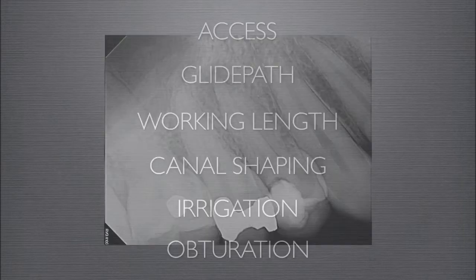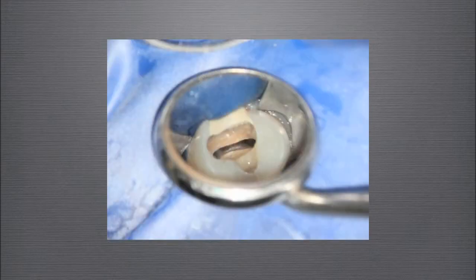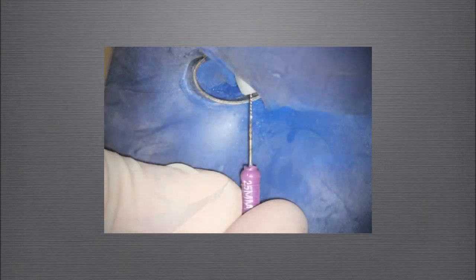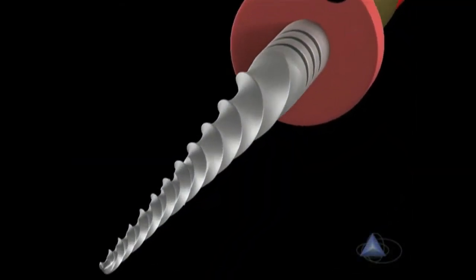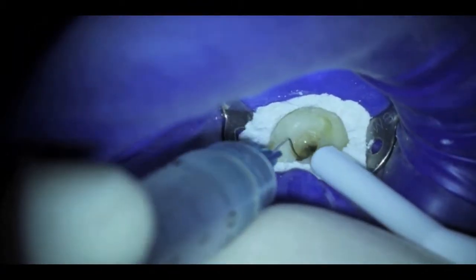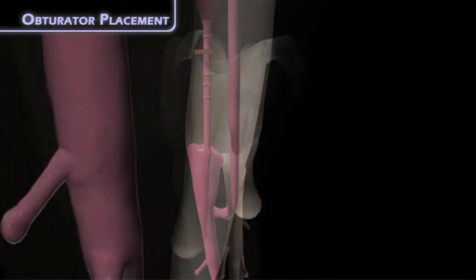Let's walk through a routine case. I treated this necrotic tooth number 5 with symptomatic apical periodontitis. First, I achieved straight-line access and established a glide path with a number 10 file. Canal orifices were shaped with the ProTaper SX file. After reconfirming my working length, a WaveOne primary reciprocating file created the final shape. Using the Tulsa Pro-Rinse needle, copious sodium hypochlorite was delivered to within 1 mm of the confirmed working length. QMix was employed as the final rinse for 90 seconds, and the canals were obturated using GuttaCore.